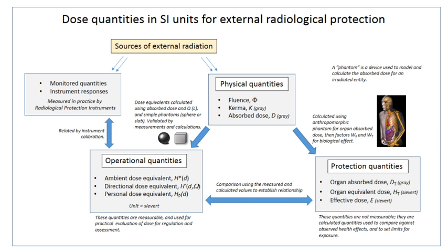Most adverse health effects of radiation exposure may be grouped in two general categories: deterministic effects, due in large part to the killing or malfunction of cells following high doses; and stochastic effects, i.e., cancer and heritable effects involving either cancer development in exposed individuals owing to mutation of somatic cells, or heritable disease in their offspring owing to mutation of reproductive cells.